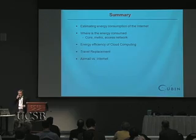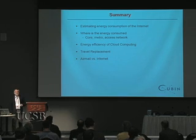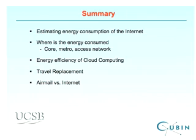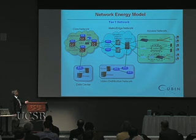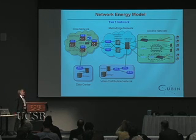I'll give an overview of our work estimating how much energy is consumed in the network and where. The key components are the core, metro network, and access network. Here is a more detailed model showing an access network connected to homes using various competing technologies, connecting to a metro or edge network, which connects to the core network linking access networks around the country and world.